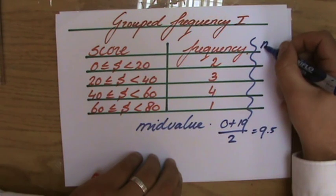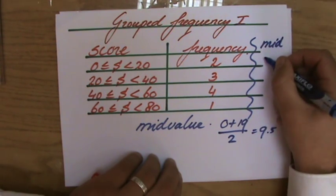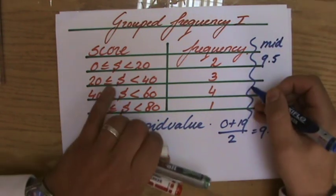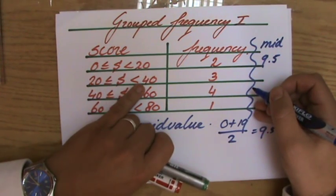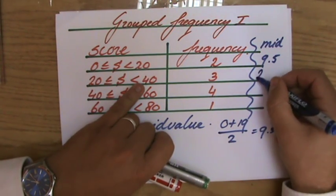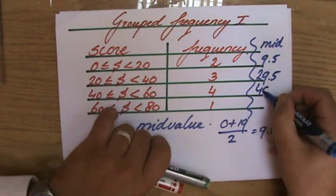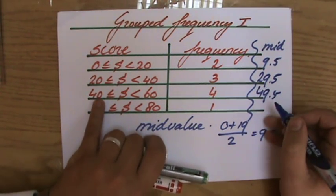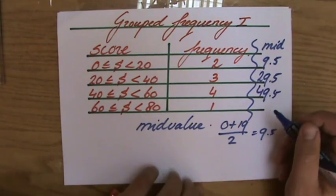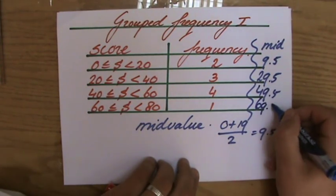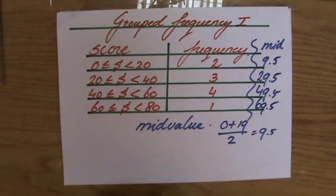So my mid-value, I'm just going to say the mid here, is 9.5. If I do that here, so 20 plus 39 divided by 2, it's going to be 29.5. 49.5, 40 plus 59 divided by 2, and 69.5. So that's the best I can do.